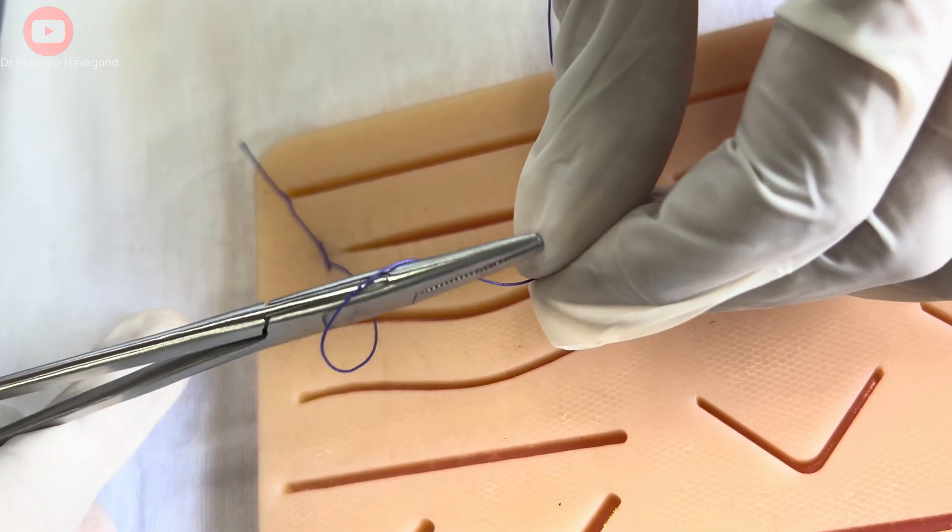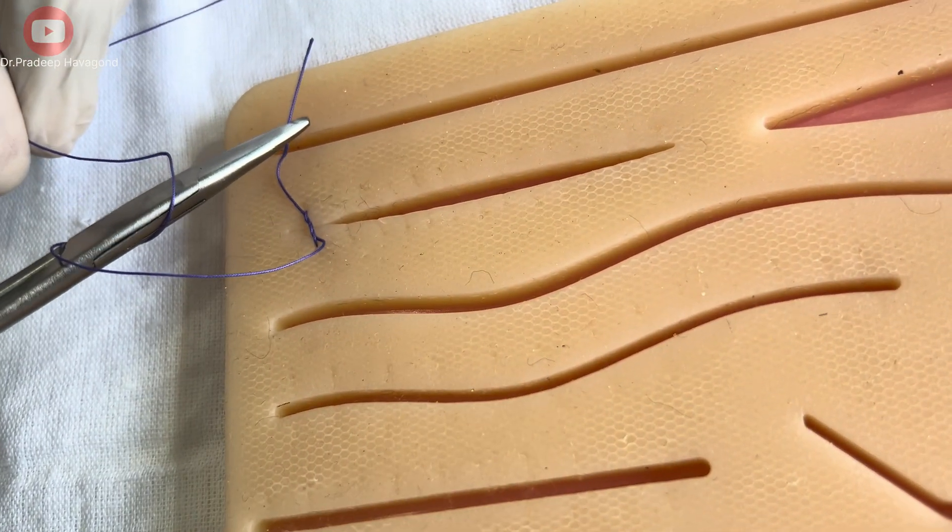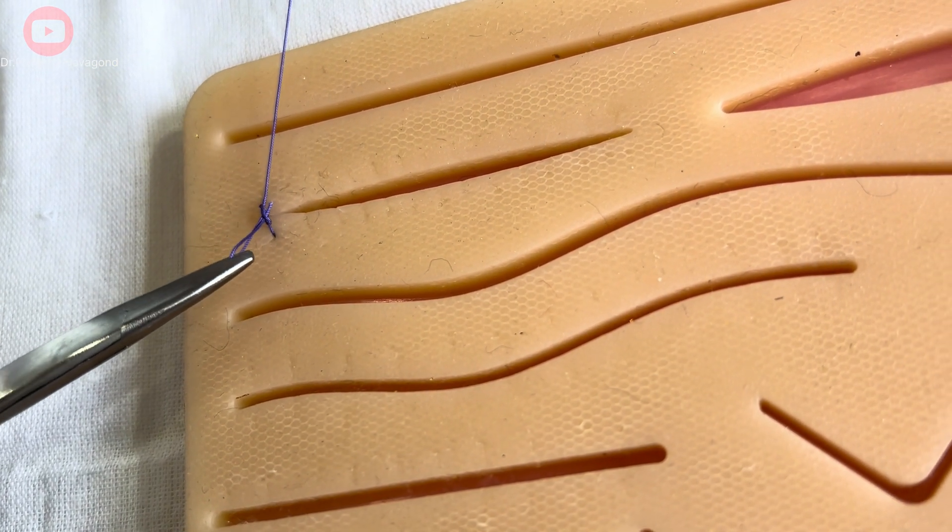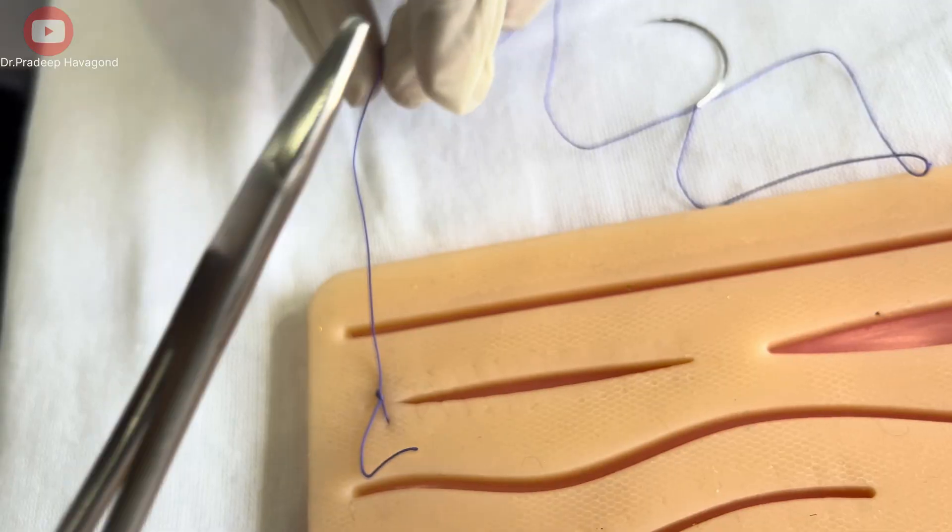Now, to secure the suture, we will tie a square knot. This is done by making two throws, one in each direction. Start by crossing the ends of the suture, then repeat in the opposite direction.